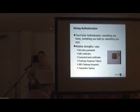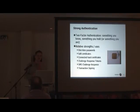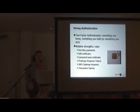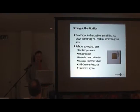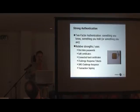Two-factor authentication is used when you want to bump up the reliability that the person who says they are is who they really are. It works off two things: something you know, which is usually your username and password, and then either something you hold, like a token device, or something you are, such as biometrics like your thumbprint. By combining a password with a device, SMS message, or one-time password sent via email, these tokens can further authenticate the user.